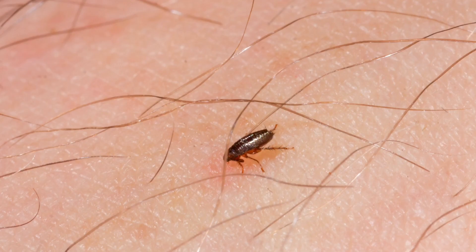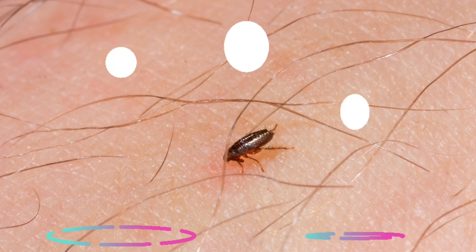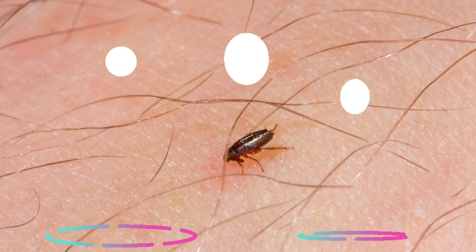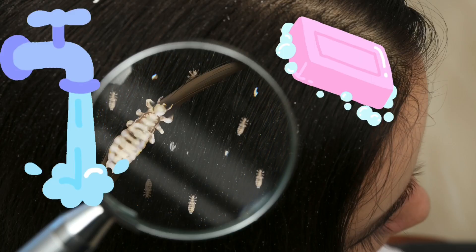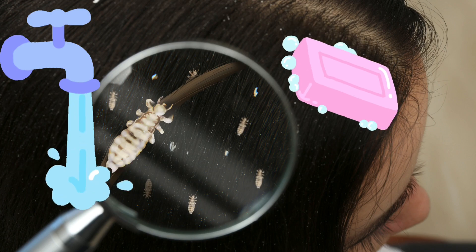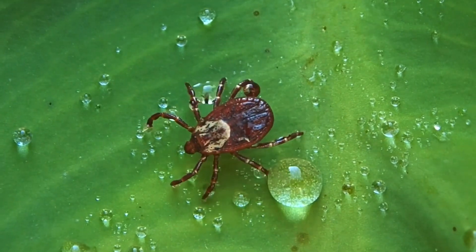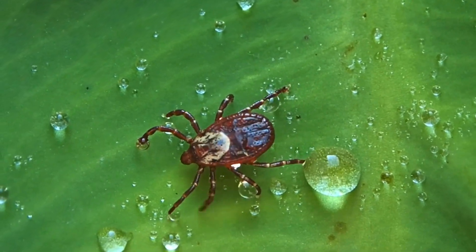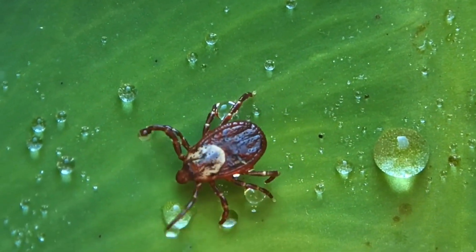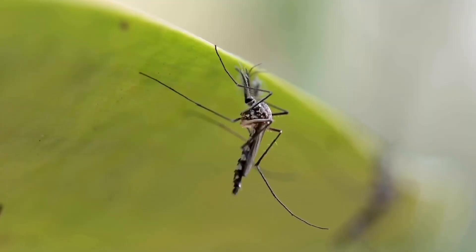This is a flea. Head lice should be treated with a special shampoo. This is a tick — it is a pest that lives on blood from animals. This is a mosquito.